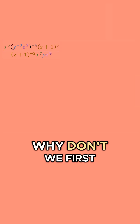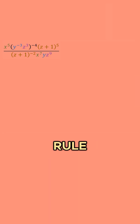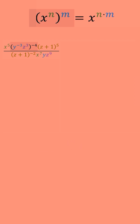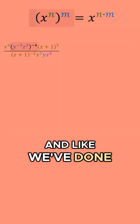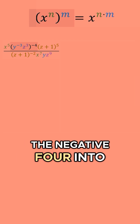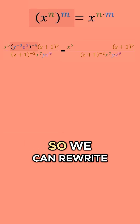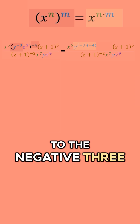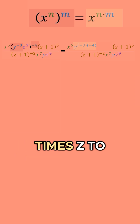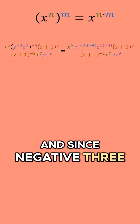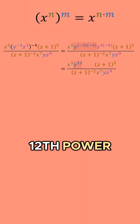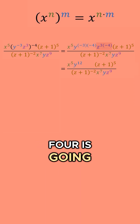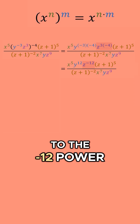Similar to all of our other examples, let's first work with the power rule. I have y to the negative third times z to the third, all raised to the negative four power. We can distribute the negative four into each one of those powers, rewriting it as y to the negative three times negative four, times z to the three times negative four. Since negative three times negative four is positive twelve, we get y to the twelfth power. And three times negative four is negative twelve, giving us z to the negative twelfth power.